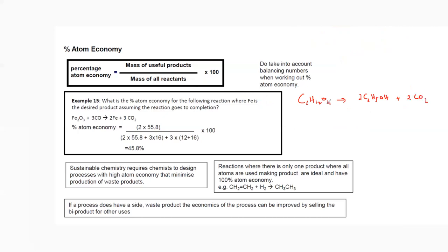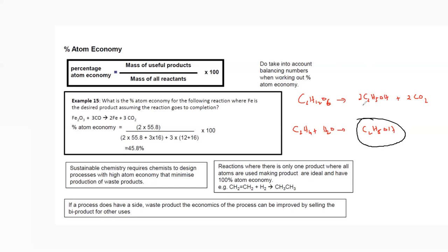The second method is by the addition reaction of ethene (C₂H₄) with steam. When there is only one product, the percentage atom economy will be 100%, because the mass of the desired product equals the total mass of reactants — dividing gives 1, and 1 × 100 = 100%.